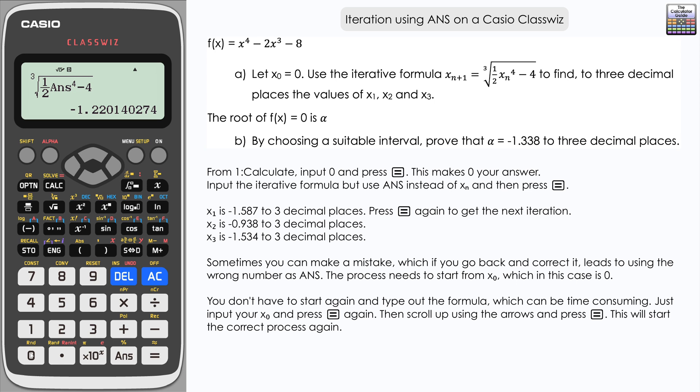If I press equals at this point, this is not going to be the correct first iteration. What I want is that ANS of zero without having to type it all again and start from the very beginning. What I can do is just press zero and equals to make that my answer. Notice it's on the answer line here, but also notice there is an up arrow. If we press up on the navigation pad, we can scroll back to the formula, and if you press equals, it will now process zero as the ANS. Notice we've got our x1 here. Press equals: x2 and x3.